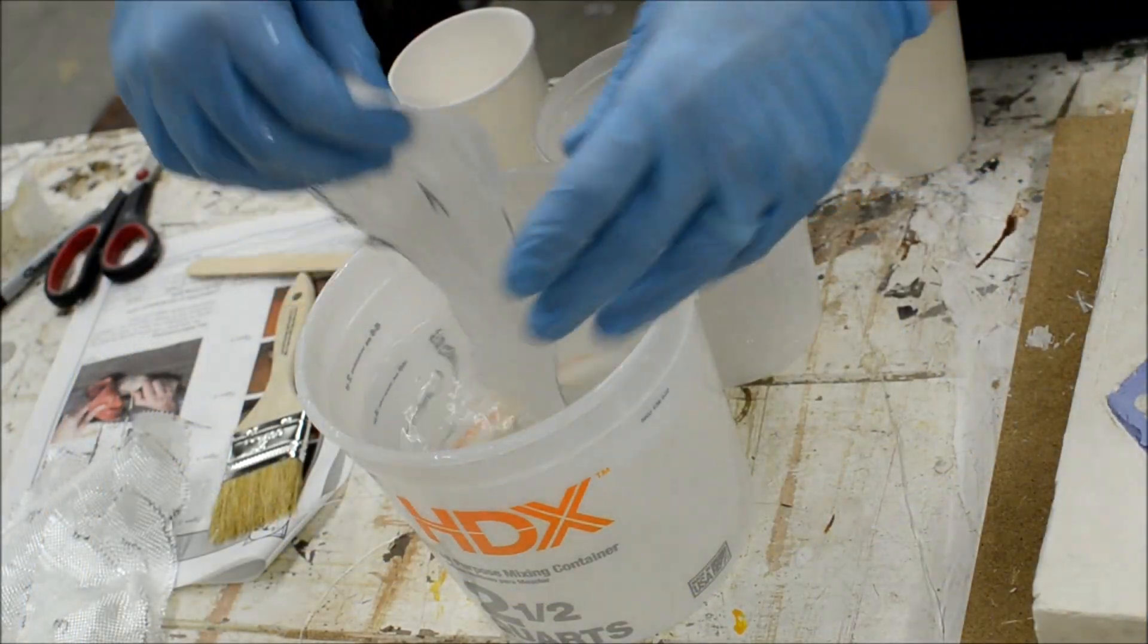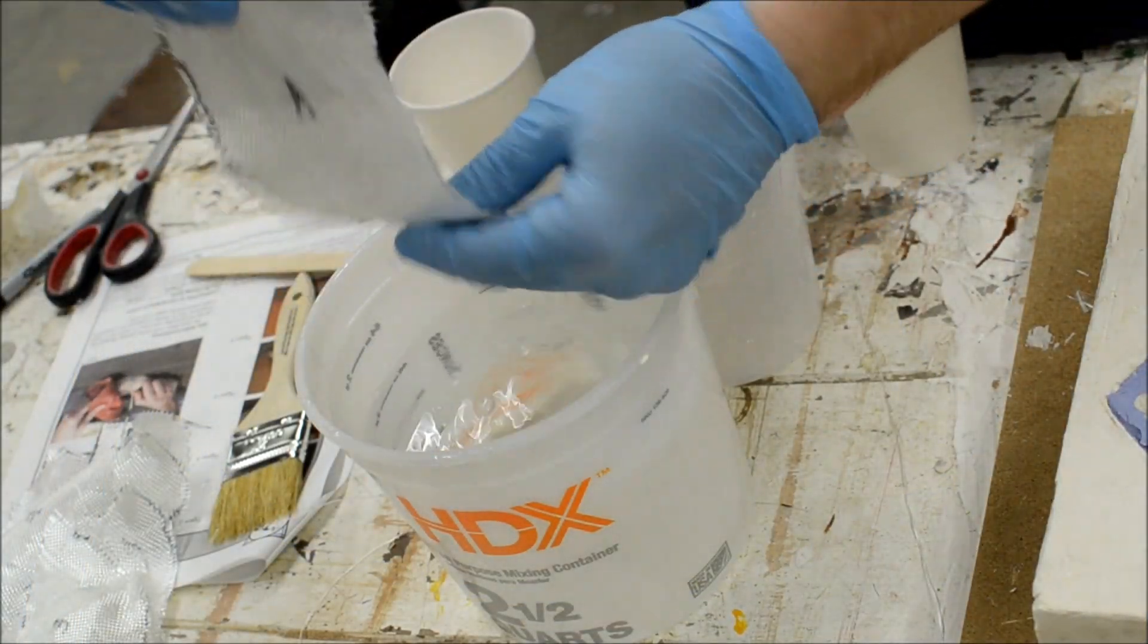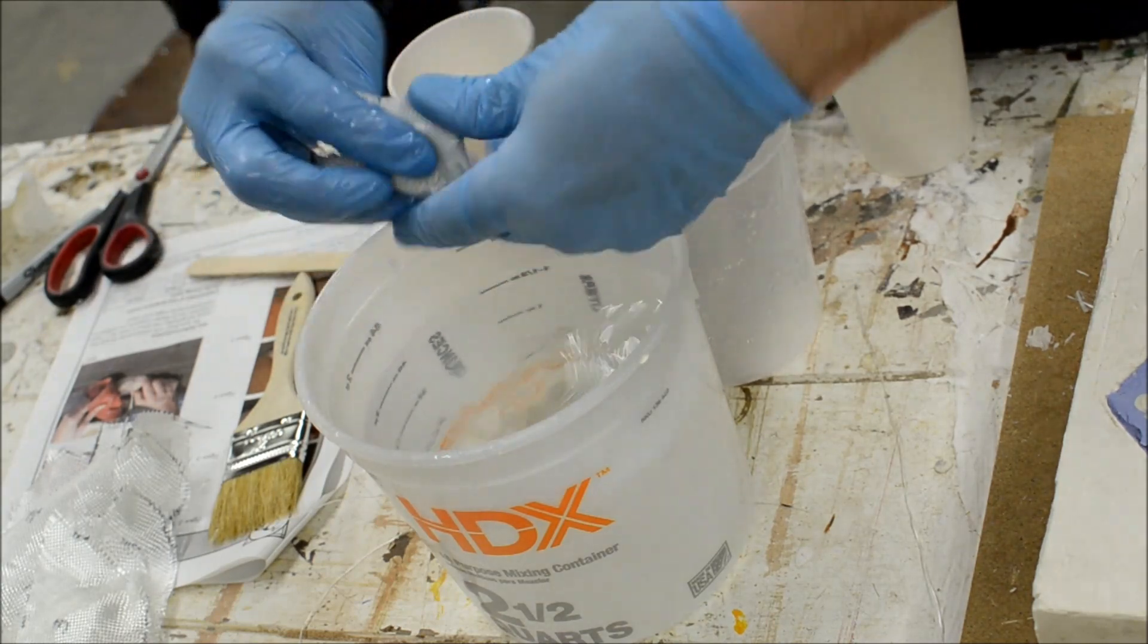Soak the fiberglass in water and wring it out fully before applying it. This will help the resin absorb into the entire cloth.